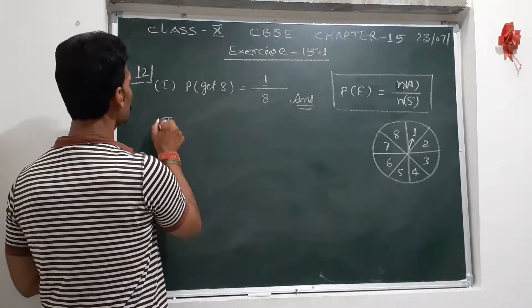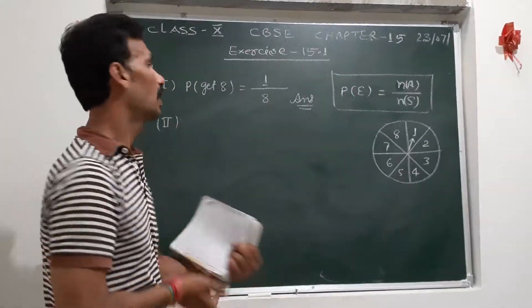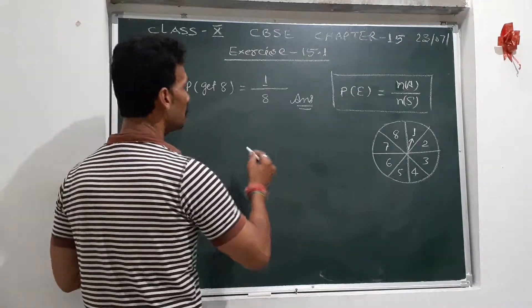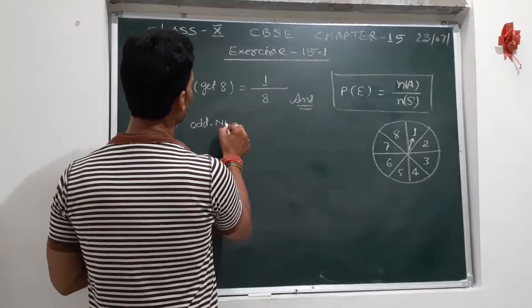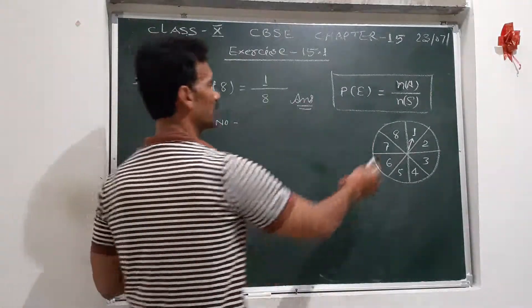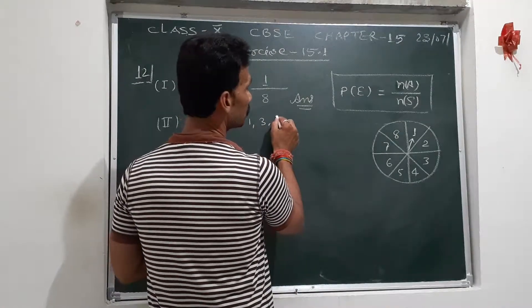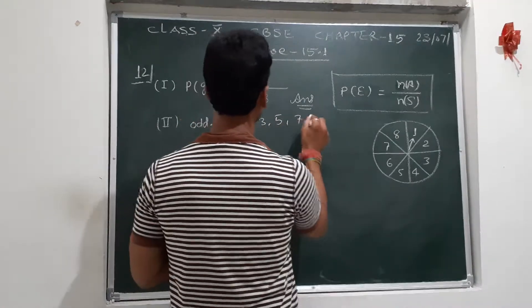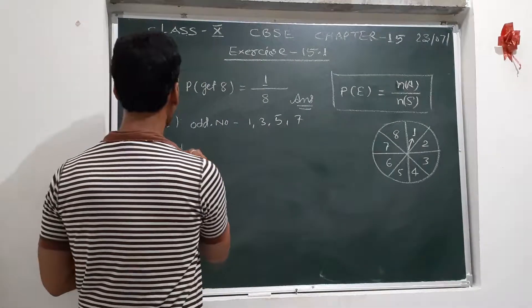Then the second one: probability of an odd number. Now, what are the odd numbers? One, three, five, and seven - total four numbers. We need probability of odd number.